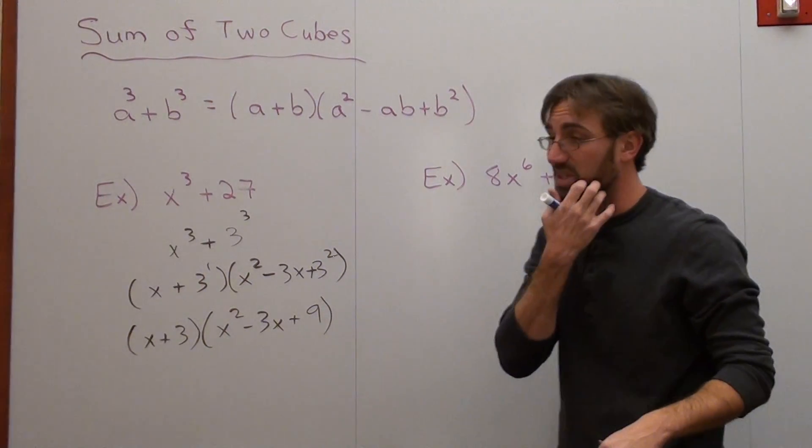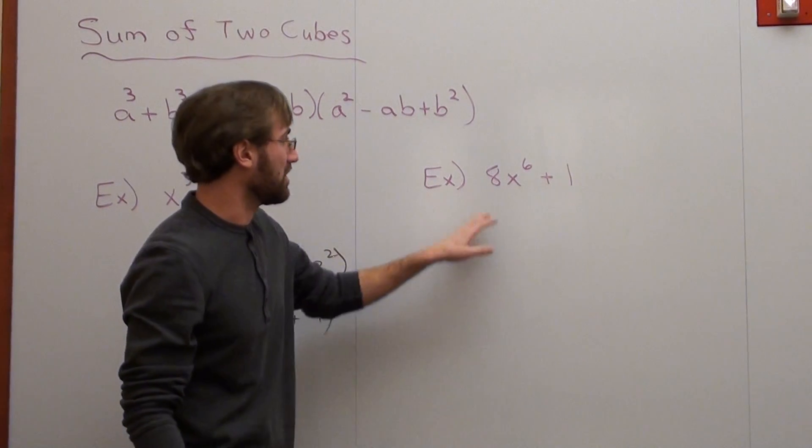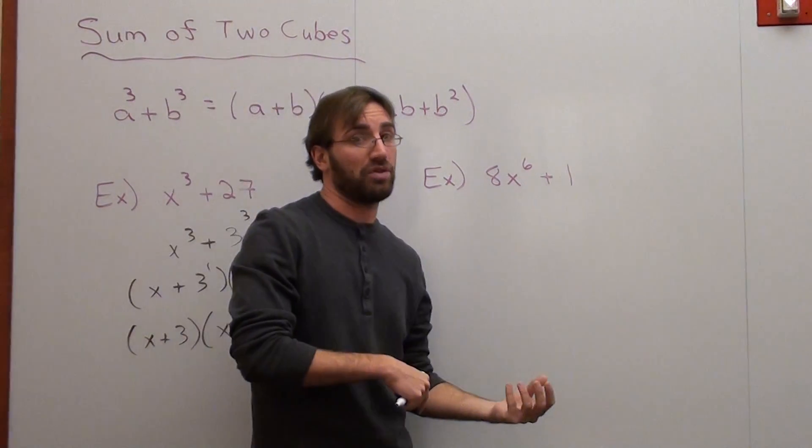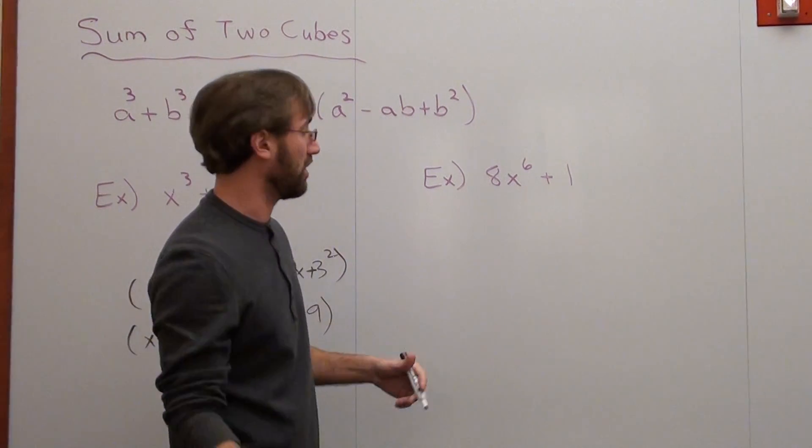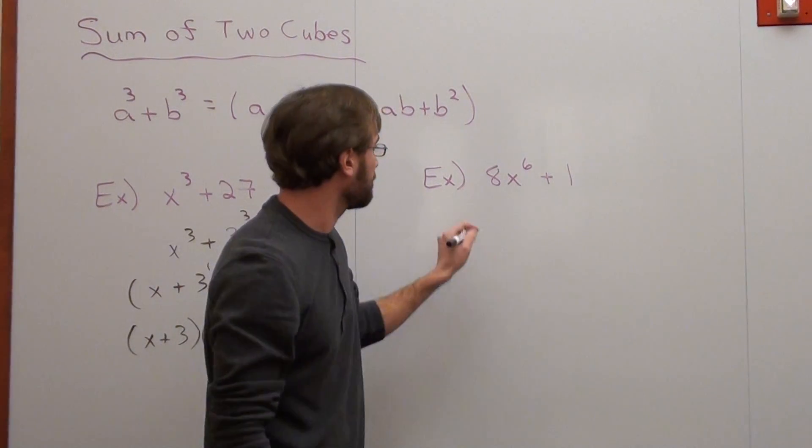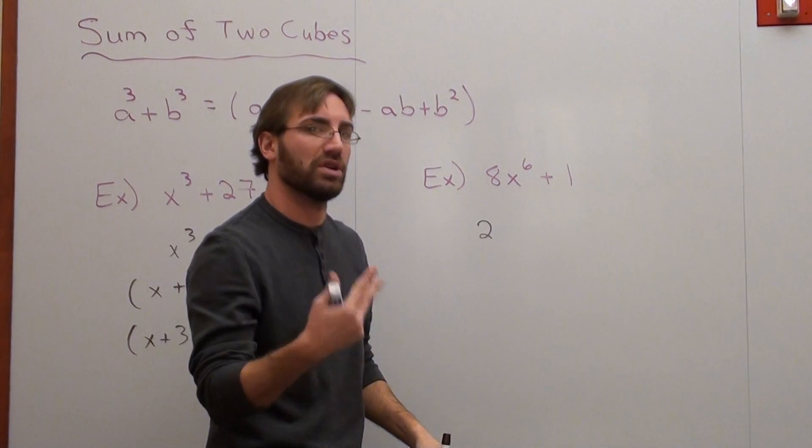This is more difficult, something that students generally tend to find more difficult, I suppose. 8x⁶ + 1. This is actually the sum of two perfect cubes as well. You can factor it. And students don't always buy into that. And I'll show you what I mean. 8 is the same thing as 2 × 2 × 2.